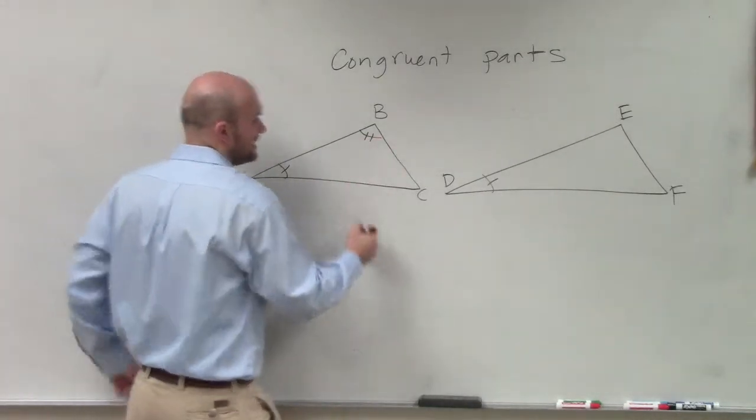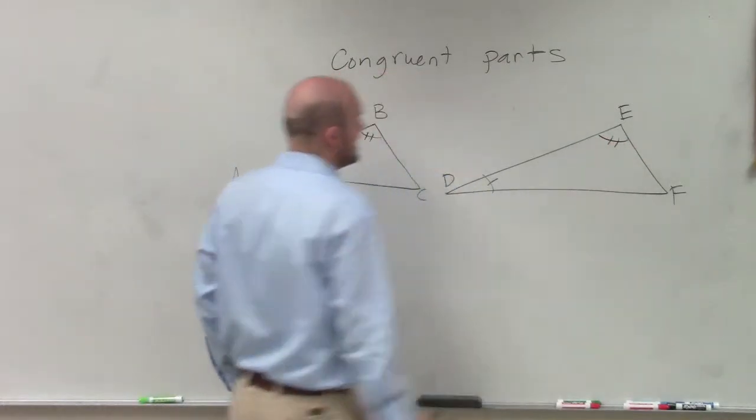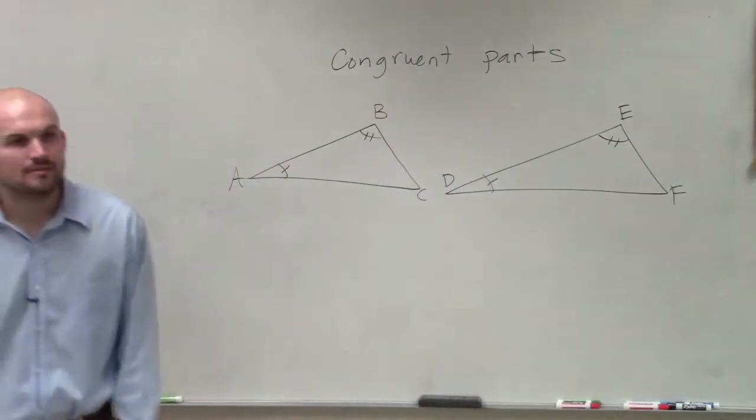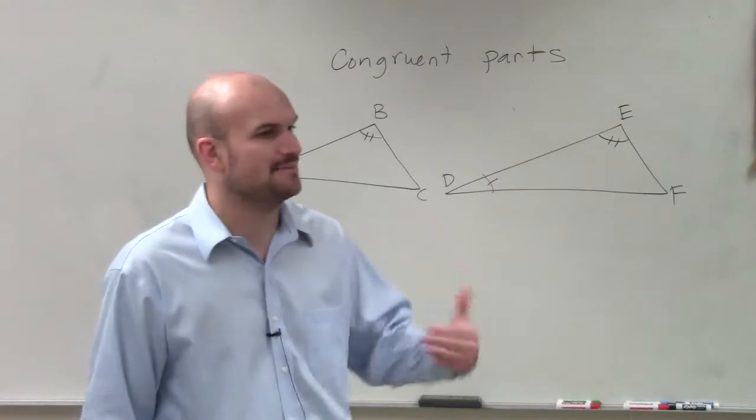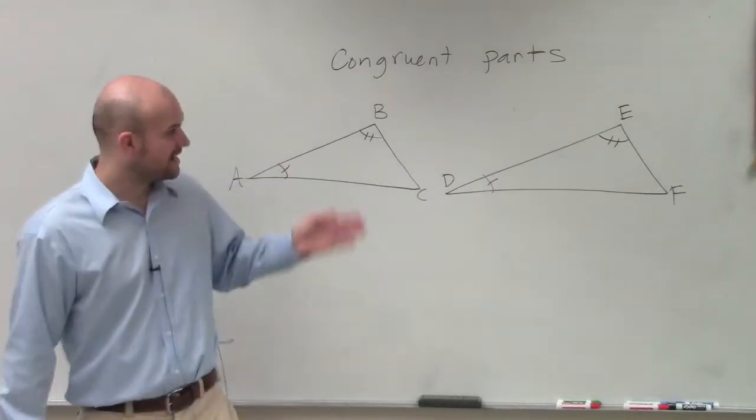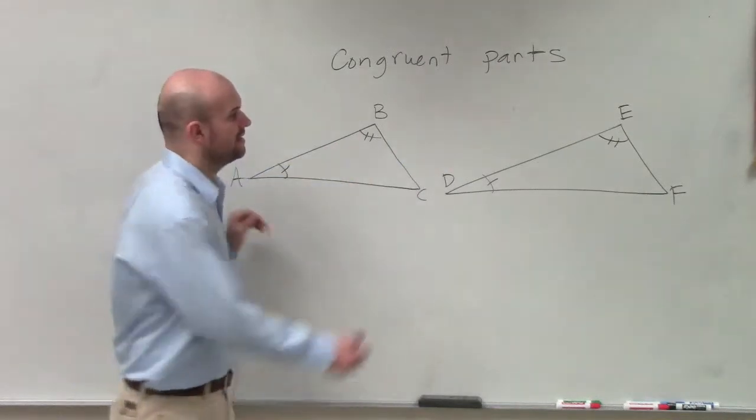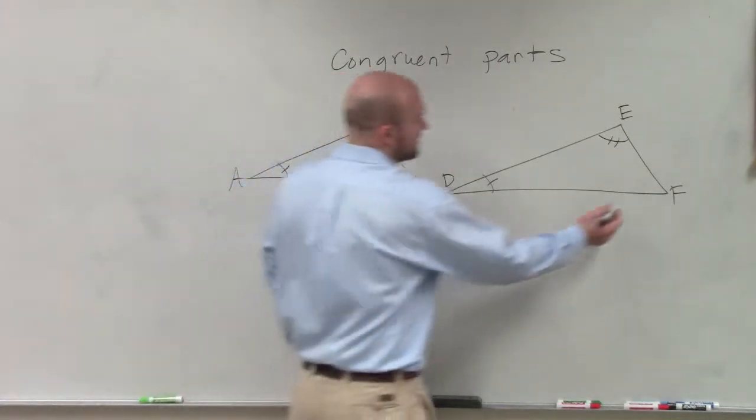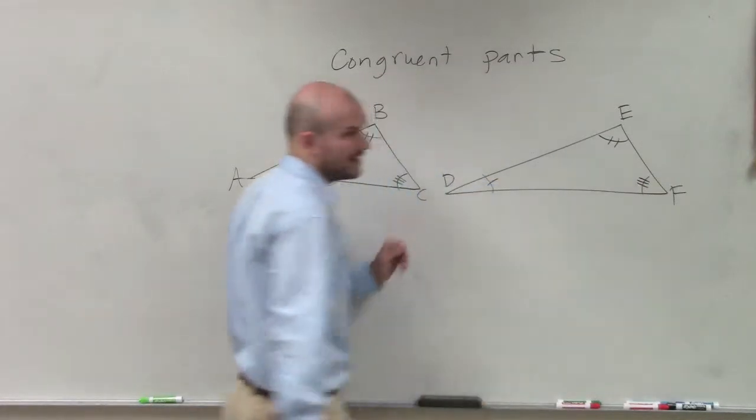Let's pretend that B and E are congruent. You guys can see those are in the exact same location of the two triangles, right? So they are congruent parts. And the same thing with F and C. OK?